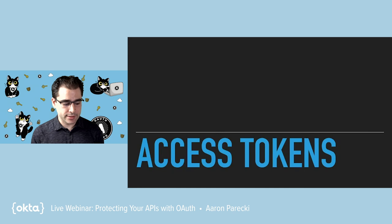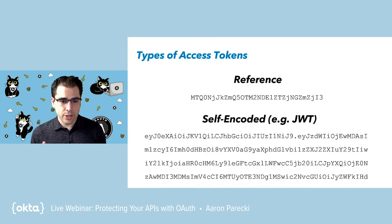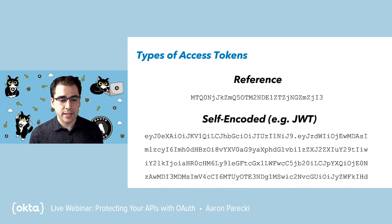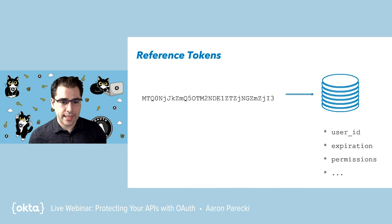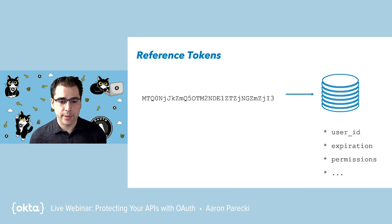The idea with an access token is that it is what's known as a bearer token — whoever has the token can use it and make API requests with it. But even within that, there are multiple different ways to implement it. Access tokens fall into two different families: they're either going to be a reference token or a self-encoded token. The idea with a reference token is that the token itself doesn't actually mean anything — it's just a reference to a record in some sort of database, which might be a SQL database, a Redis cache, or any other way of storing data. That string itself doesn't mean anything on its own — it's a reference to things like the user ID, expiration date, permissions, and so on.